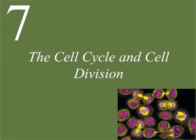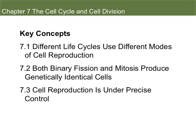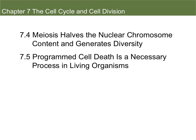Hey y'all, Ms. Mayhew here, and we are going to go over part two of the chapter seven notes. In the last video, we already went over 7.1, 7.2, and 7.3, covering the different modes of cell reproduction, genetically identical cells produced in binary fission and mitosis, and how the cell cycle is under precise control through CDKs and cyclins. In this video, we're going to talk about meiosis, which halves the nuclear chromosome content and generates diversity, and also programmed cell death as a necessary process in living organisms.